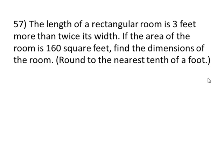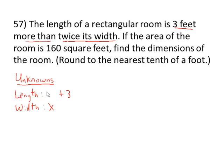One last problem to go. The length of a rectangular room is 3 feet more than twice its width. If the area is 160 square feet, find the dimensions of the room and round that to the nearest tenth of a foot. So we'll begin with our unknowns: length and width. This is pretty common for a rectangle problem. Since the length is given in terms of the width, we will let the width be x. The length is 3 feet more than, that tells me to add 3 to something. 3 feet more than what? Twice its width. Twice its width is 2 times its width, or 2x.